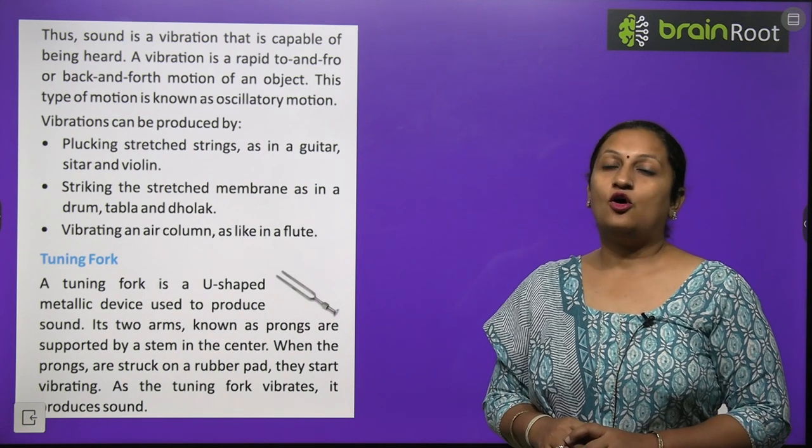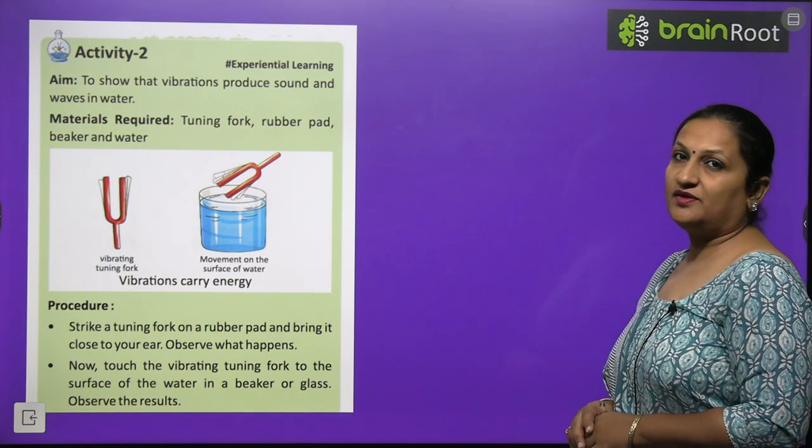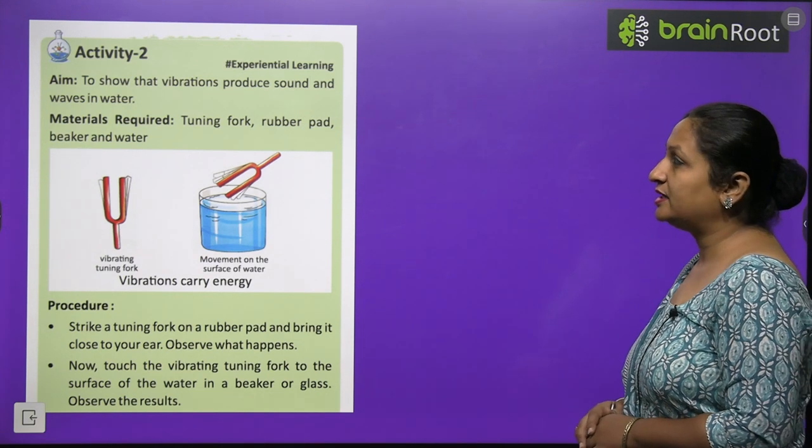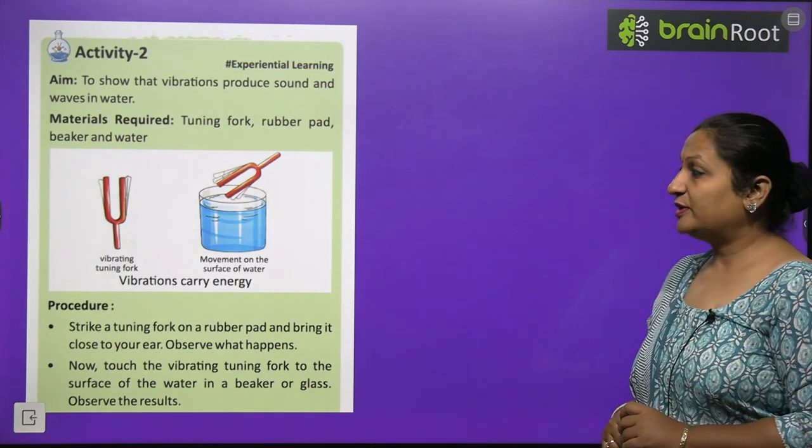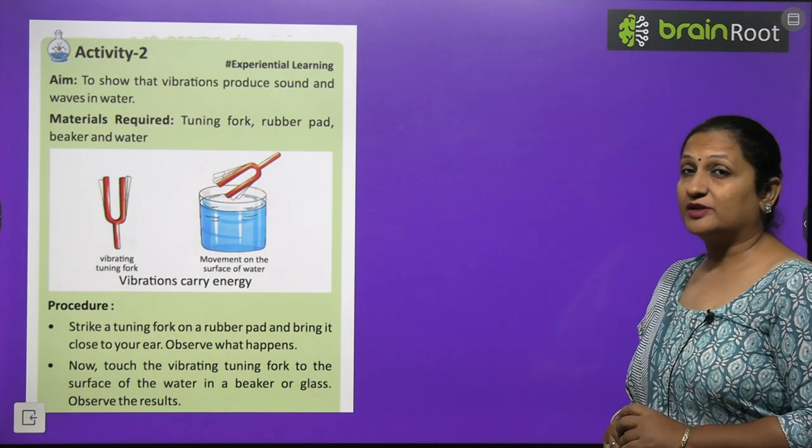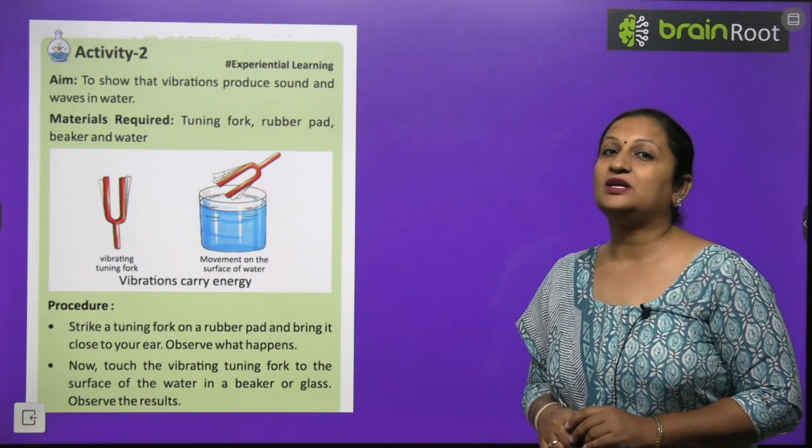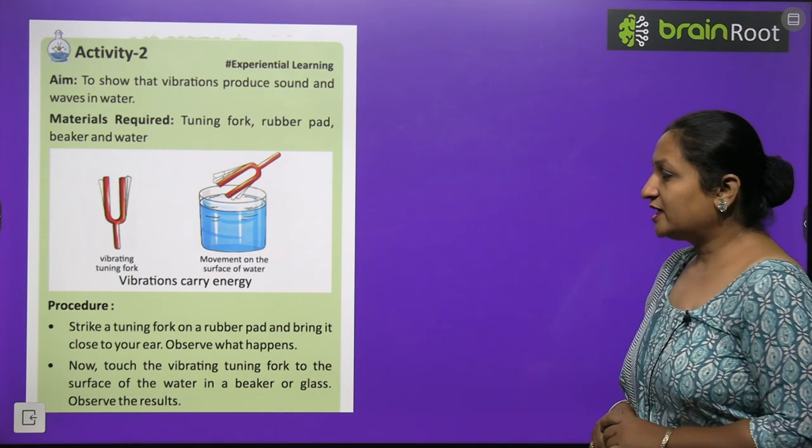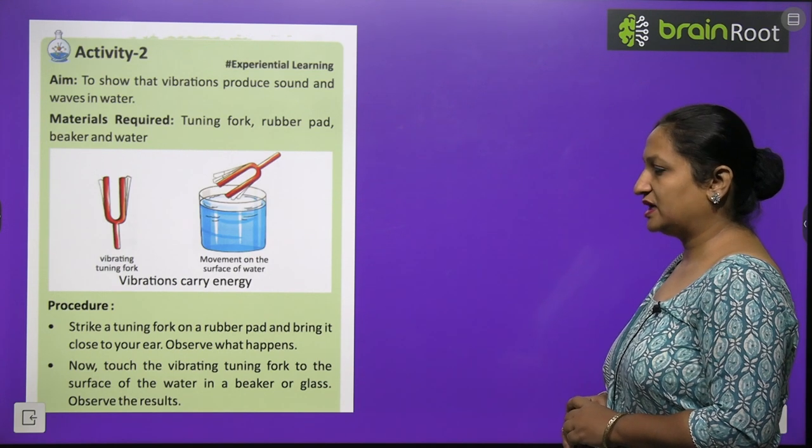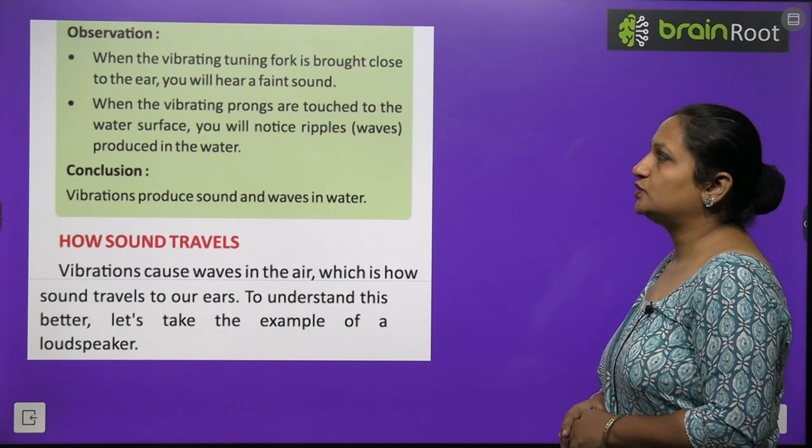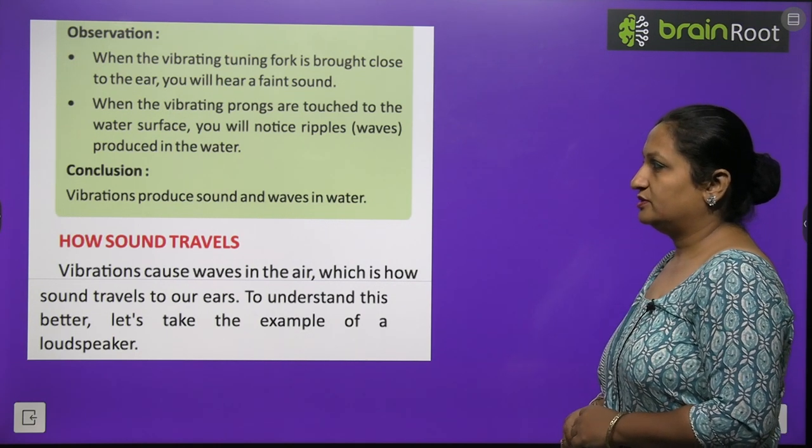Tuning fork. A tuning fork is a U-shaped metallic device used to produce sound. Its two arms are known as prongs. They are supported by a stem in the center. When the prongs are struck on a rubber pad, they start vibrating. As the tuning fork vibrates, it produces sound. You can do this at home with a chimta. If you strike it, you will see it shows to and fro motion and sets into vibrations, and you will hear sound.